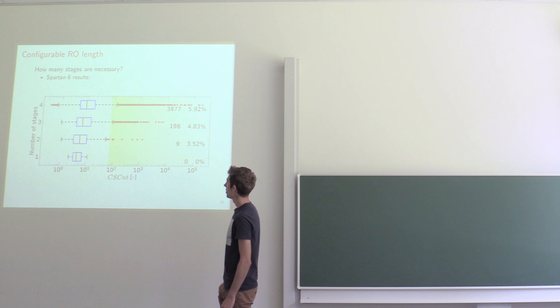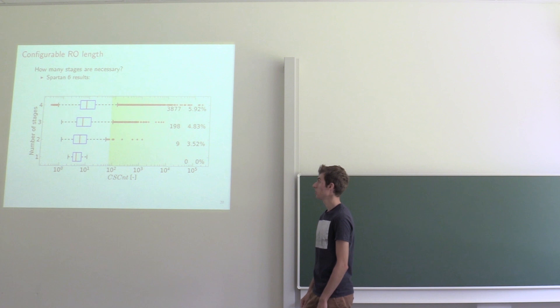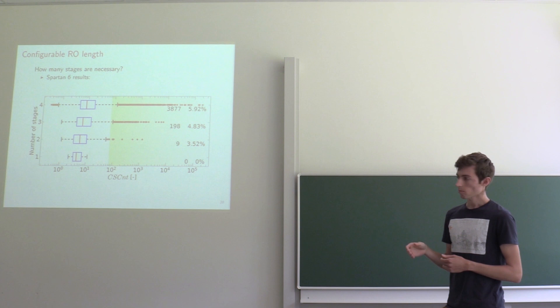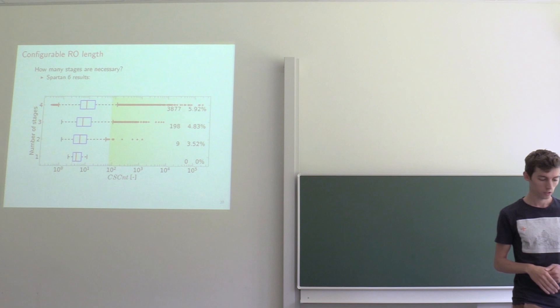but we chose to be more robust and go for three stages, which gave us almost 5% of the configurations that were actually valid. So on average, the controller has to go through 20 different configurations until it finds one that is suited for use.